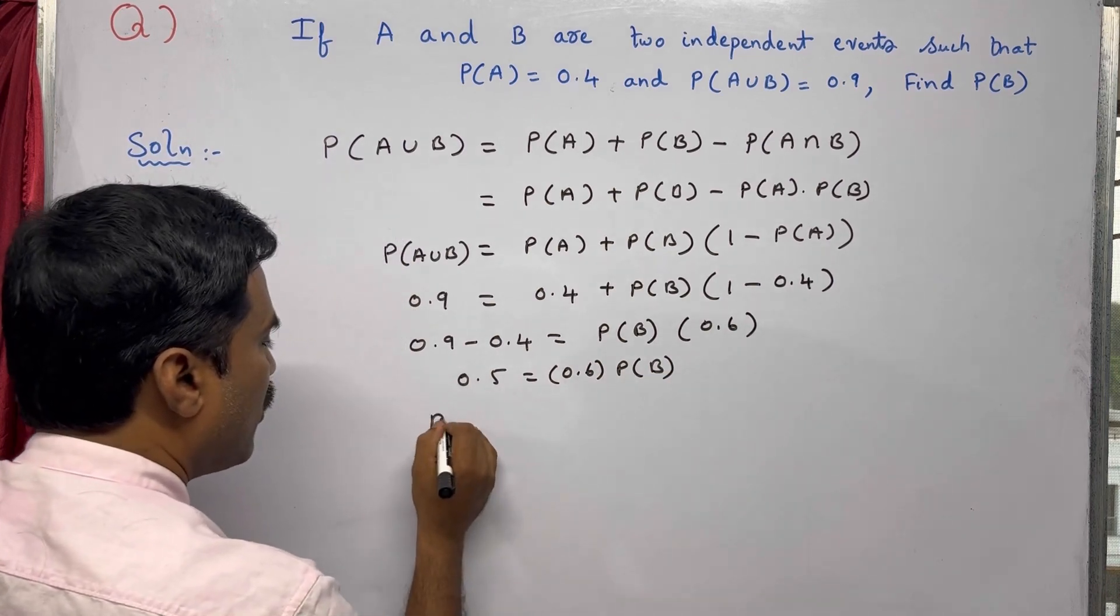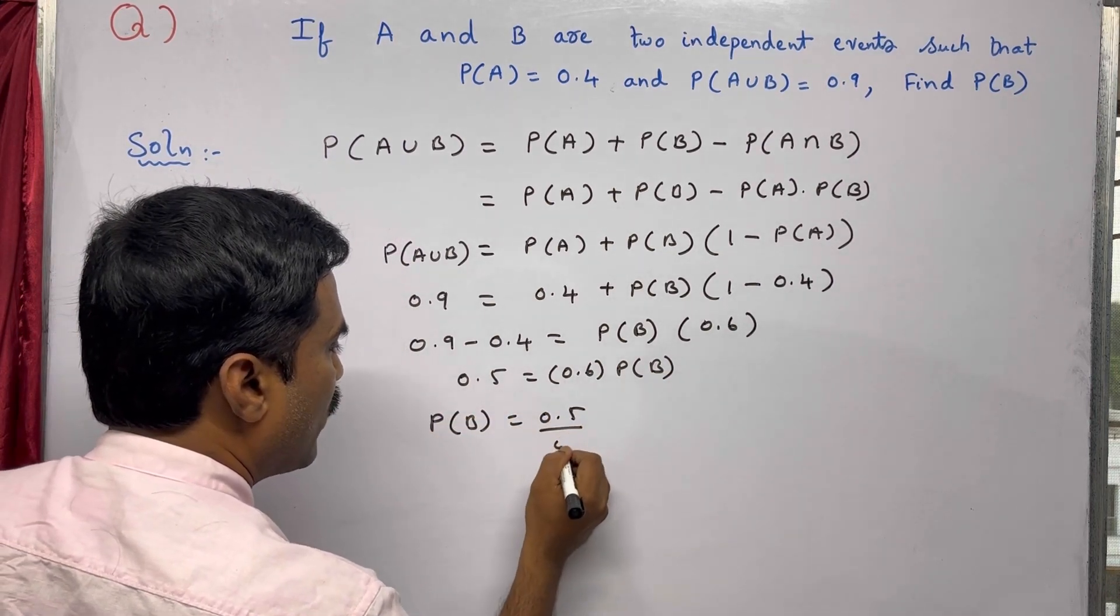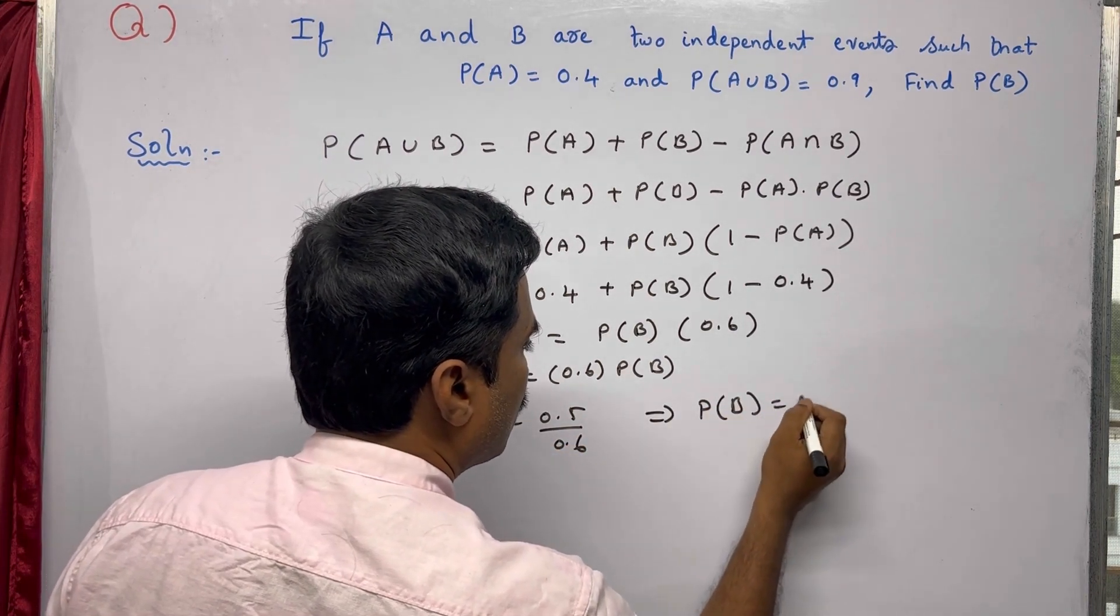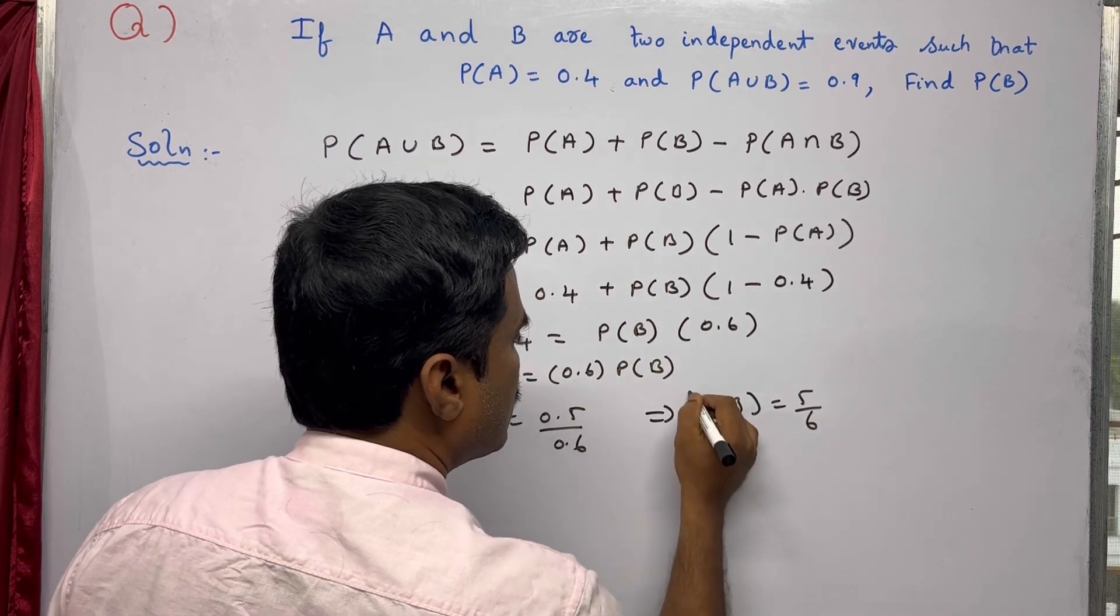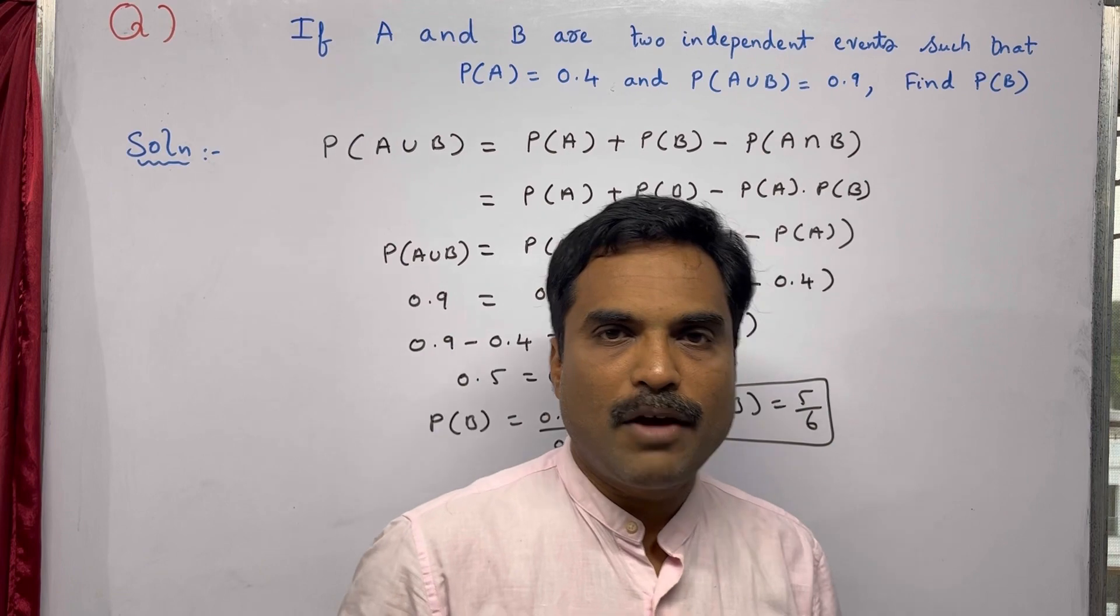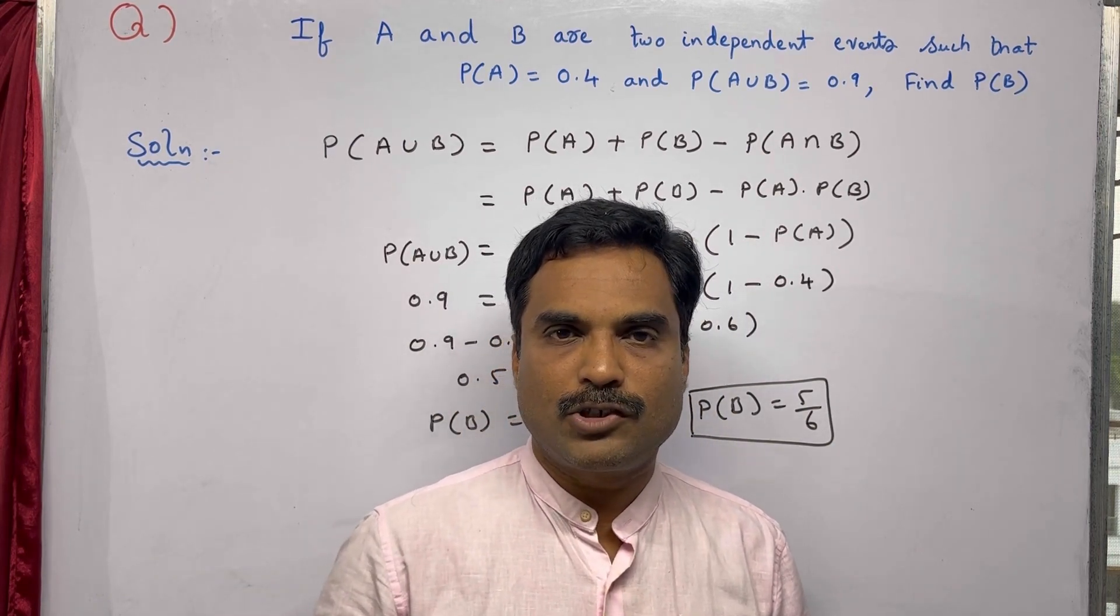From this, P(B) equals 0.5 divided by 0.6, so this implies P(B) equals 5/6. This is the solution for this problem. If you like my video, please subscribe my channel Yanam Taksha Sila for further updates. Thank you for watching my video.